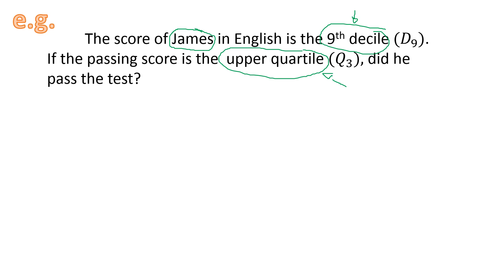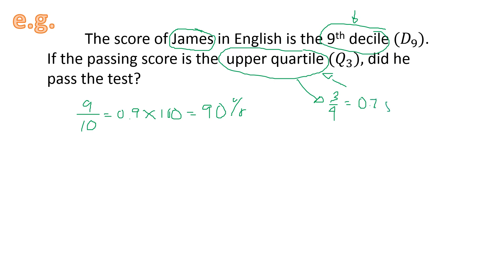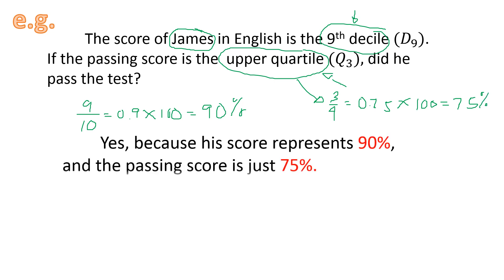What is the ninth decile in percent? 9 divided by 10, so 9 for ninth and 10 for decile, gives us 0.9. Multiplying by 100 gives us 90%. For the upper quartile, 3 divided by 4 gives us 0.75, then multiplied by 100 gives us 75%. Since 90% is higher than 75%, therefore James managed to pass because his score represents 90% and the passing score is just 75%, which means he is above the passing score.